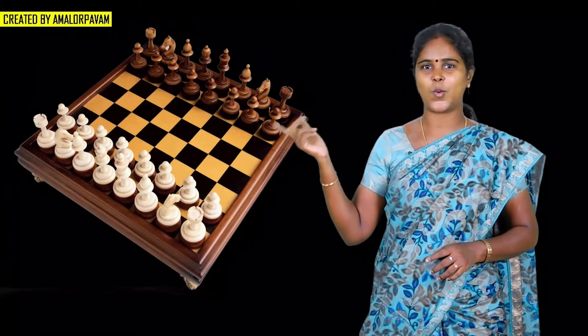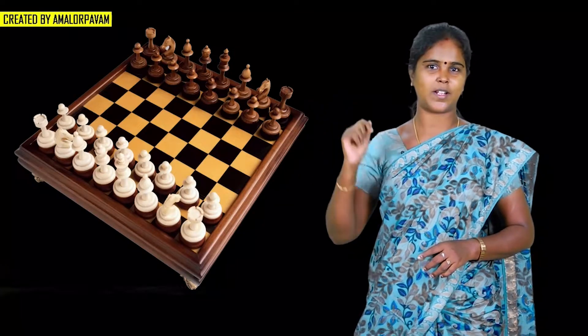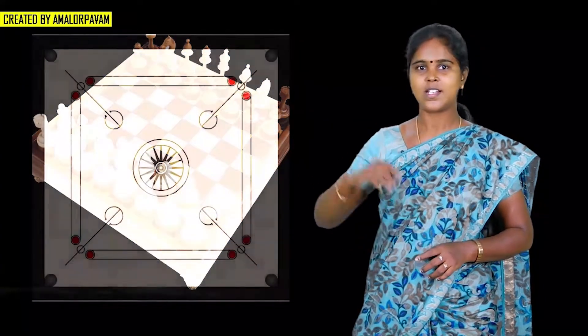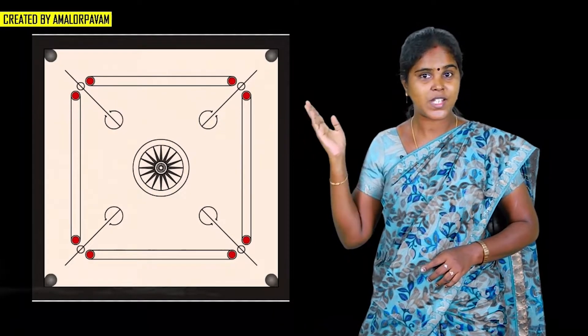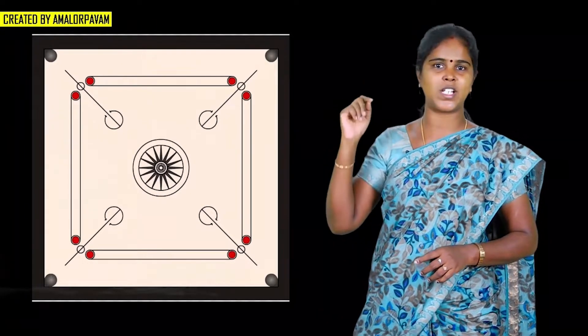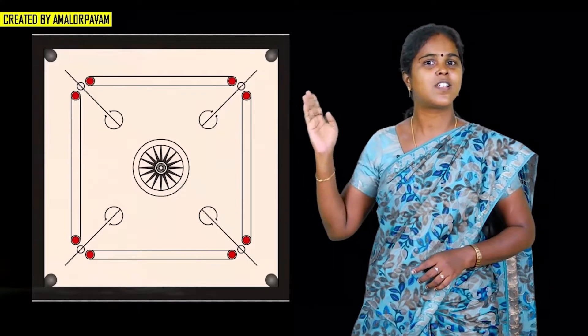Now, the second shape is square. Shall we see some objects in square shape? First object is gift box. What is the shape of this gift box? Square. Next, see this chess board. What is the shape of this chess board? Square. The shape of the chess board is square. Next, see the square M. It is also in square shape.